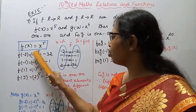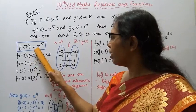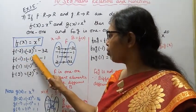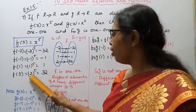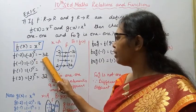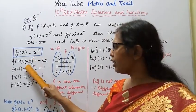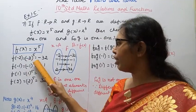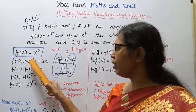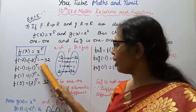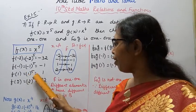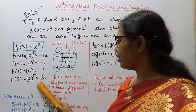f(minus 2) = (minus 2)^5 = minus 32. f(minus 1) = (minus 1)^5 = minus 1. f(1) = 1^5 = 1. f(2) = 2^5 = 32. When the power is odd and the value inside the bracket is negative, the result will be negative.